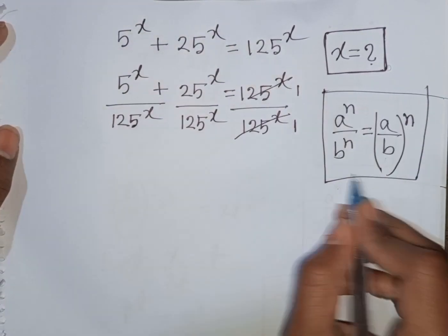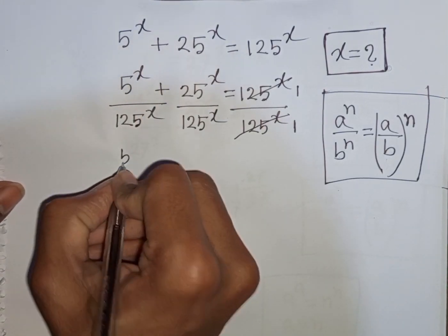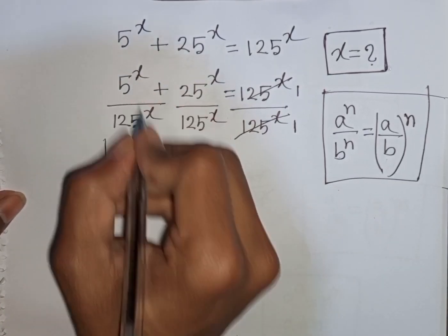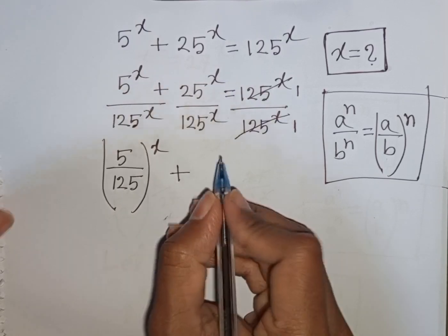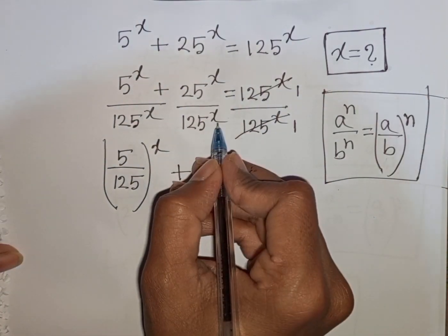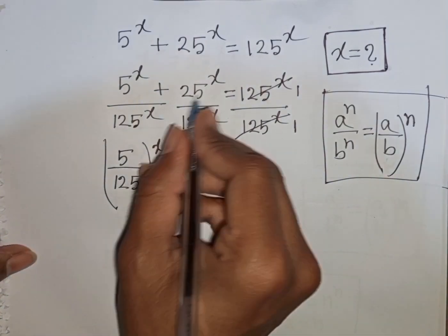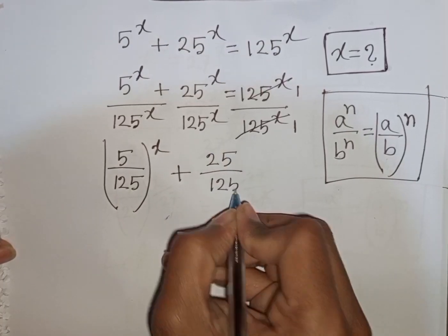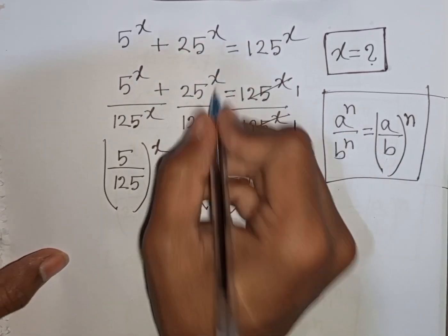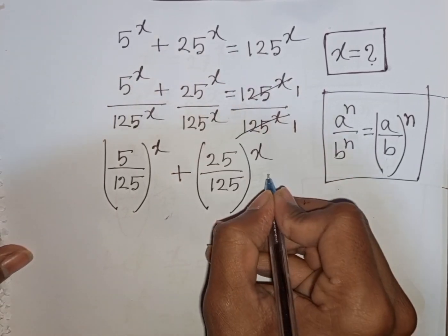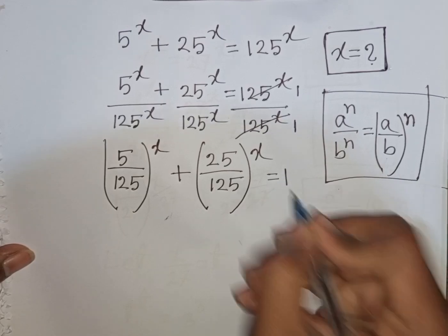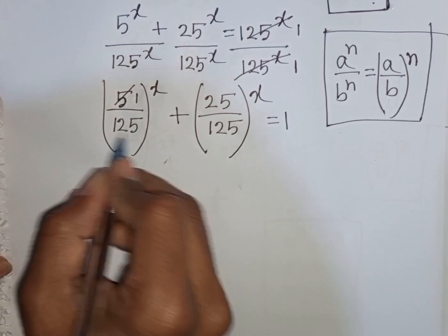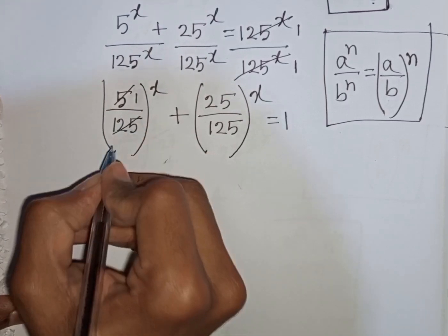According to this exponential rule, we can write (5 over 125) power x plus (25 over 125) power x equals 1. Now 5 divided by 5 is 1, and 125 divided by 5 is 25.